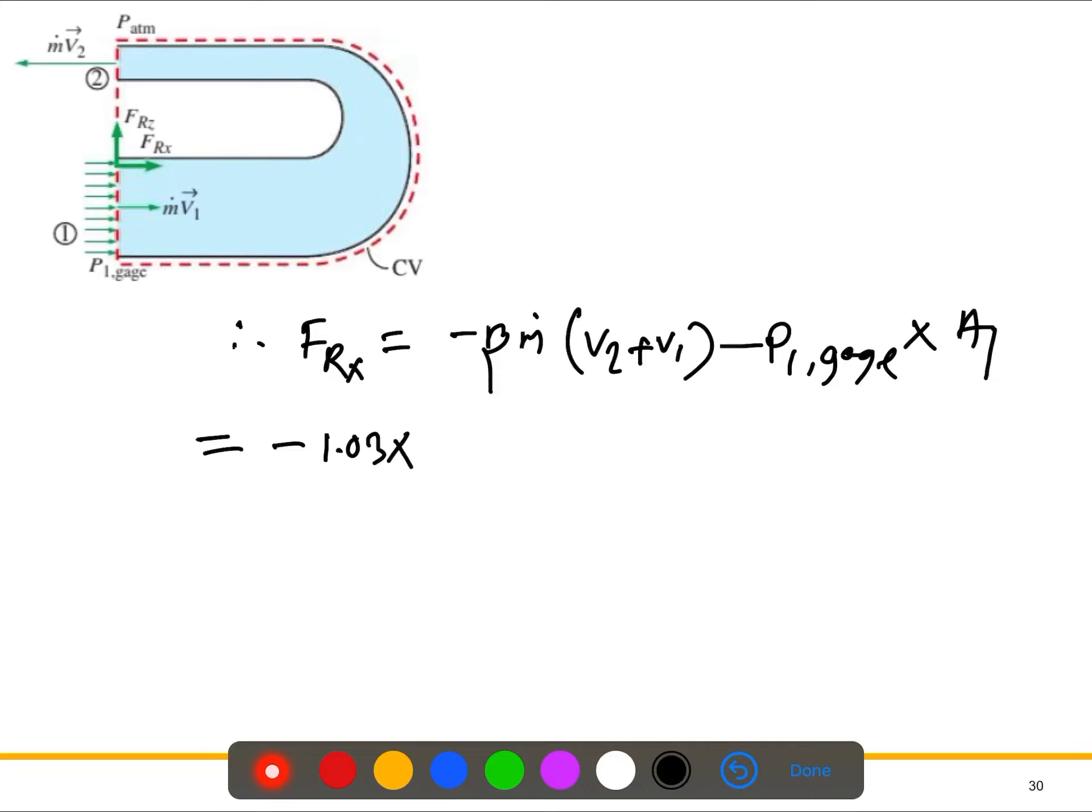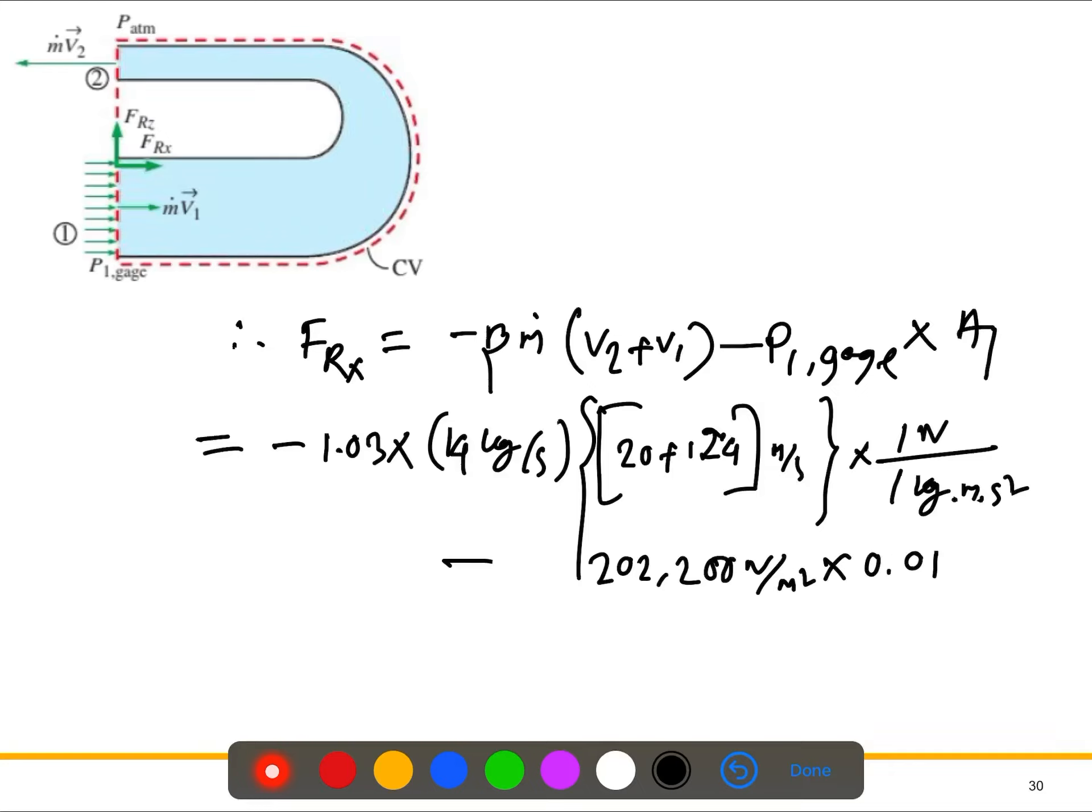Beta equals 1.03, like the previous problem. If you are not clear, just go to the previous problem, the lecture problem. M is 14 kg per second, v2 is 20, v1 is 1.24 meters per second. And then we can convert this like 1 Newton over 1 kg meter per second squared, minus the gauge pressure.